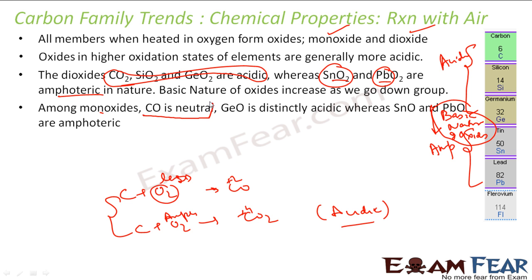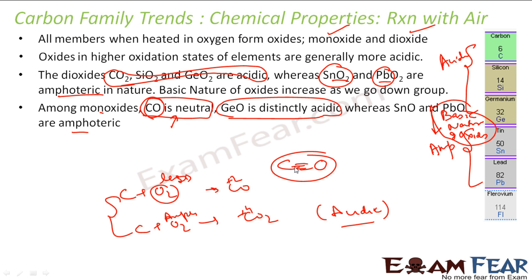Among monoxides, CO is neutral, GeO is acidic, and others are amphoteric. Carbon monoxide is the only exception — it is neutral. Going by the trend it should be acidic, but it's neutral because the triple bond between carbon and oxygen is very strong, with a bond energy of 870 kJ/mol. Because of this high bond energy, carbon monoxide is the exception. Going down the group basic nature increases, but CO remains neutral.